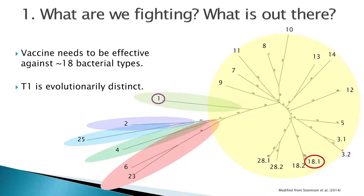The first step in designing a vaccine is you need to know what you're actually fighting — what is out there and what does your vaccine have to protect you from. A few years ago, a postdoc in our lab did a survey on all the types of Group A Streptococcus circulating in Auckland as well as overseas. This is a genetic tree summarising that work, and the key finding is that Group A Strep actually has 18 different types — 18 different strains. That tells us our vaccine has to protect against every one of those strains; otherwise there's no point.